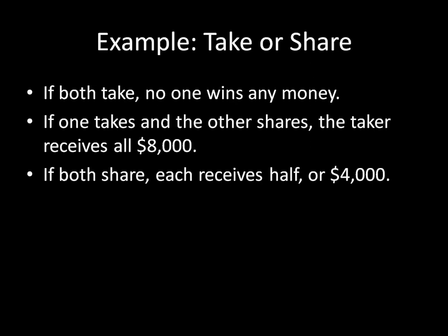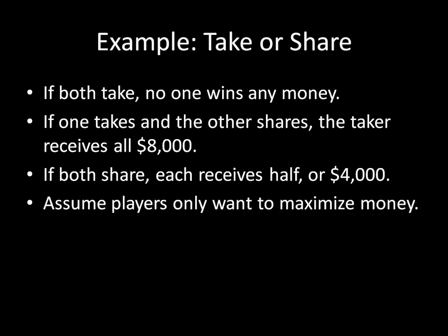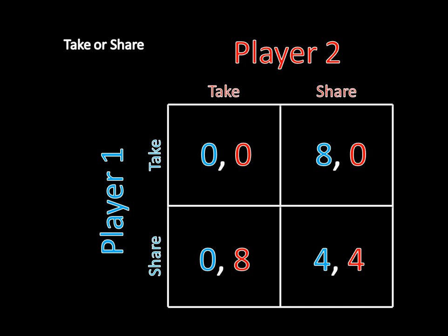Based on that choice, we have the following payoffs. If both players take, then no one wins any money. If one takes and the other shares, then the taker receives all $8,000 and the sharer receives nothing. And if both share, each receives half the money, or $4,000 apiece. Assuming the players only want to maximize money, we have this payoff matrix where player one and player two each choose take or share.